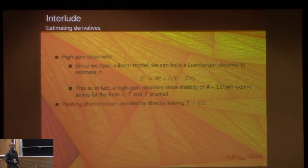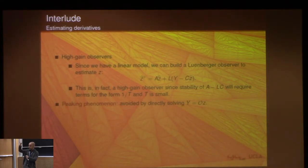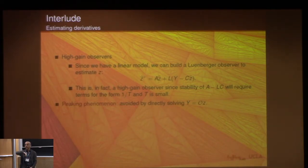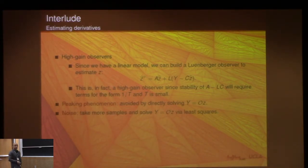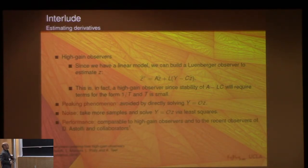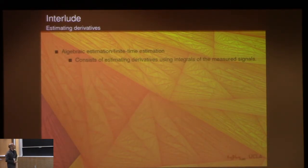High-gain observers have a problem called the peaking phenomenon: you need to make them very fast, but the faster you make them, the higher the overshoot. In our case, because I'm computing the final estimate directly without intermediate estimates, I don't see the overshoot. High-gain observers are also highly sensitive to noise. Here, if the estimates are corrupted by noise, I take more samples to average out the noise. There's also more recent work on better-performing high-gain observers, and we did some tests where the performance is comparable.